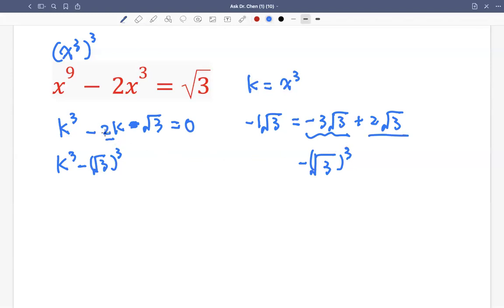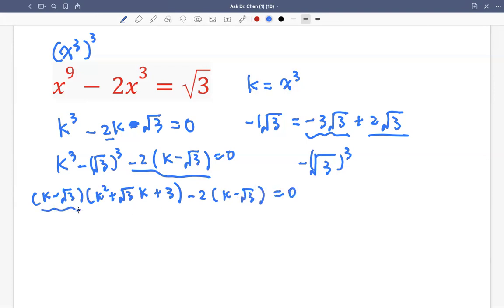So radical 3 cube. Then we can apply difference of 2 cubes formula. Then this 2 radical 3 with negative 2k, we can factor out the negative 2. Then we have k, because this is a plus. Plus now becomes minus, minus radical 3. So in this case, difference of 2 cubes can be factored as k minus radical 3 times k square plus radical 3 k, plus radical 3 square, which is just 3. Then this one, minus 2 k minus radical 3. We have constructed a common factor, which is k minus radical 3.